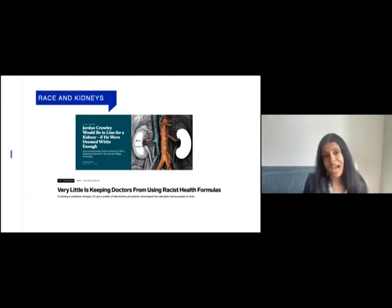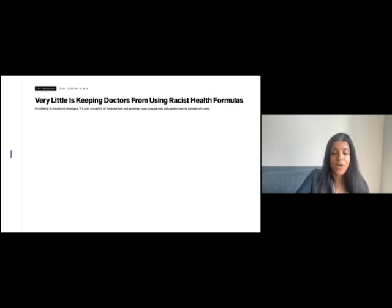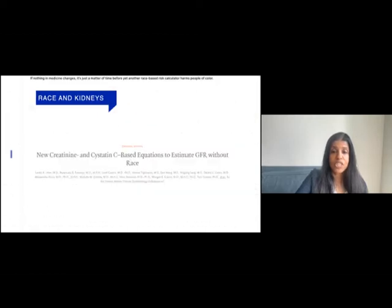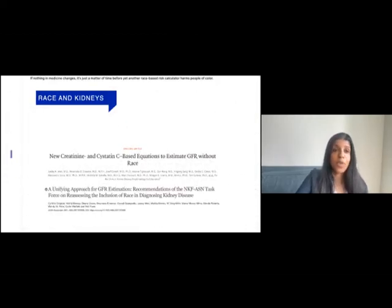U.S. national media highlighted multiple stories including that of Jordan Crowley last year. Jordan is a biracial individual with one Black grandparent and three white ones, but was determined by his medical chart to be Black, which resulted in a higher estimated eGFR and ultimately delays in his kidney transplant wait listing.